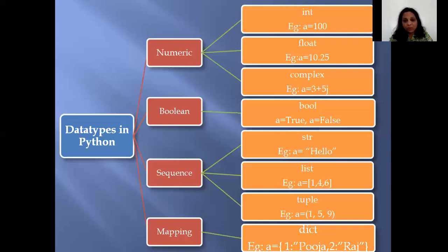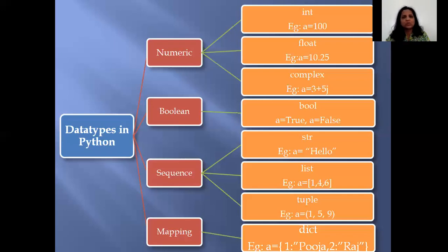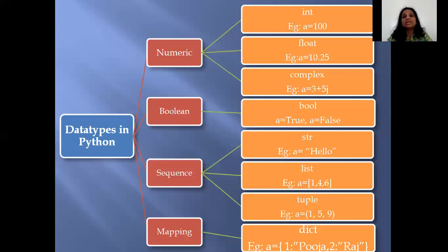In terms of syntax, a list is written within square brackets, whereas a tuple is written within parentheses — the round brackets. Then the last category: string, list, tuple, and dictionary are all going to be learned as individual chapters in detail. The last category is the mapping category. In the mapping category, we have a data type called dict — the dictionary. Dictionaries are enclosed within curly braces.